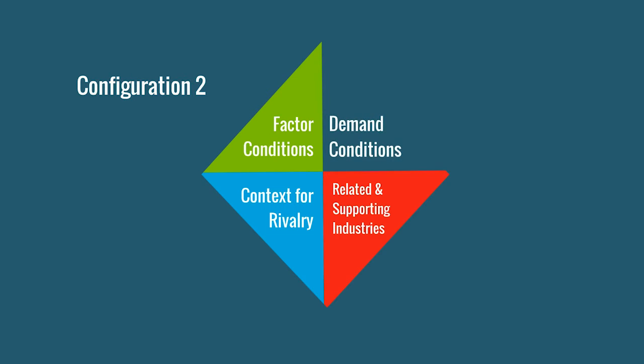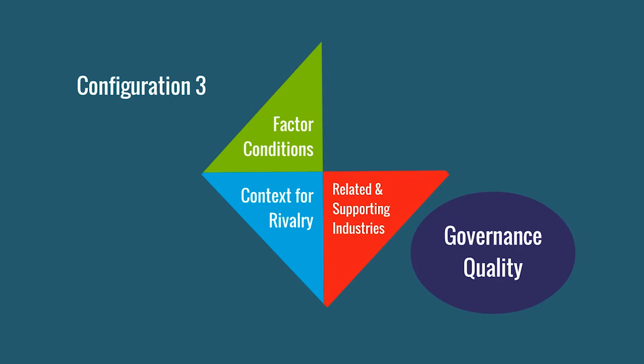Configuration three contains three of the four components of the diamond model. Here, related and supporting industries replaces demand conditions from configuration one. Configuration three also contains high governance quality.